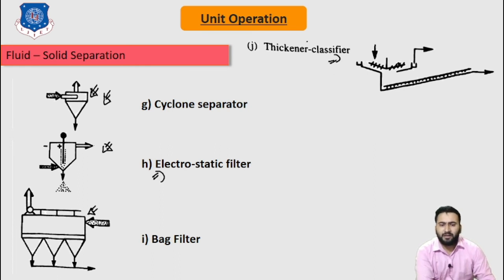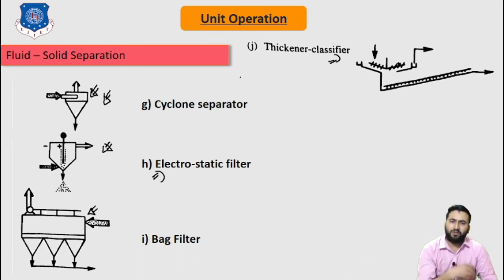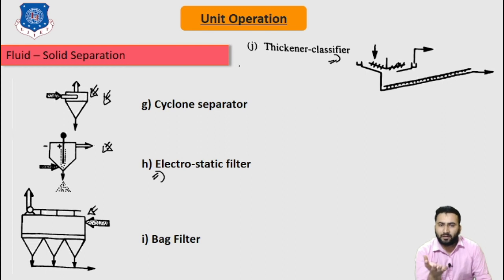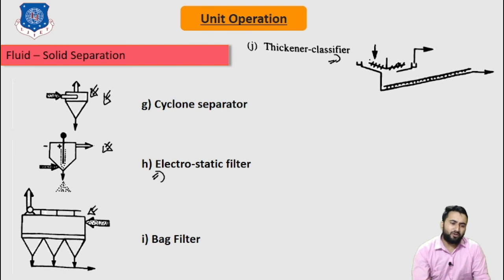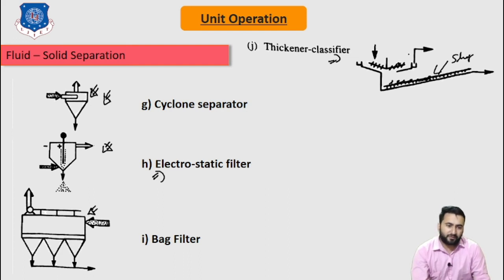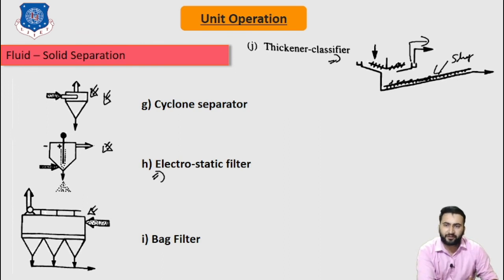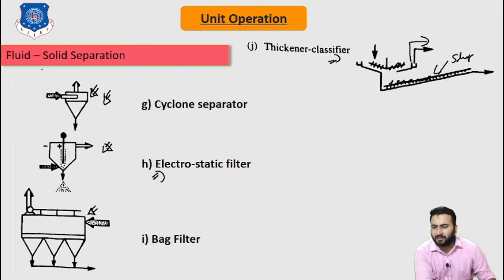Now let's discuss about the thickener classifier, which is used to separate slurry into sludge and clear liquid. It is widely used in the mineral industry and sewage treatment plants. In a sewage plant, the solid settles as sludge and from the opposite side we can remove the clear liquid or clear water for further separation processes. This is all about today's lecture. Thank you.